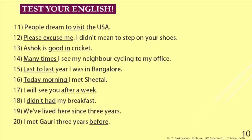Sentence 16: 'Today morning I met Sheetal.' What is wrong with 'today morning'? Sentence 17: 'I will see you after a week.' How do you correct 'after a week'? Sentence 18: 'I didn't had my breakfast' — meaning I did not had my breakfast. What is wrong with 'didn't had'? Sentence 19: 'We have lived here since three years.' The underlined word is 'since' — what is wrong with it? Sentence 20: 'I met Gowri three years before.' 'Before' is the underlined word — what is wrong with it?